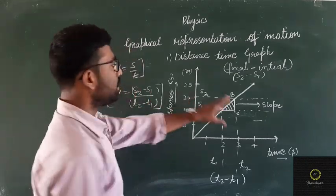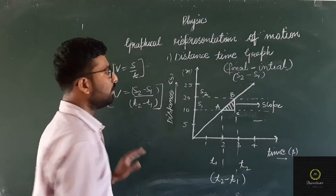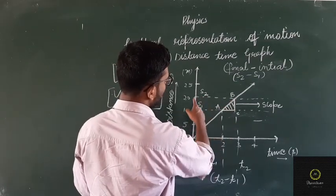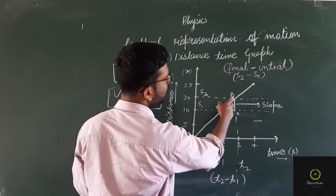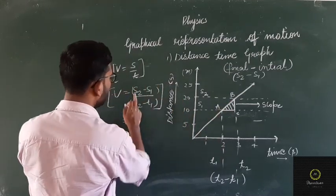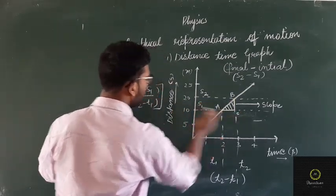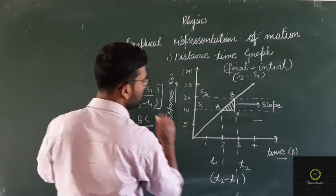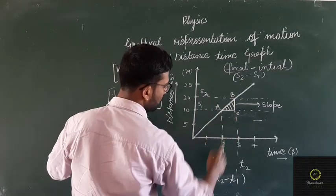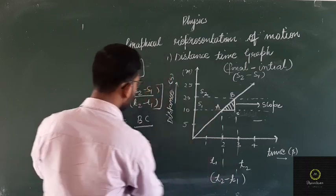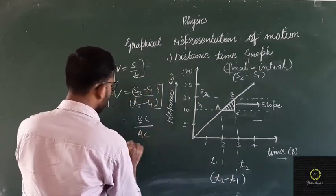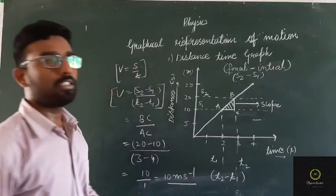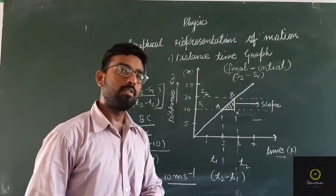S2 minus S1 is the gap — for example 20 minus 10 — that is BC. T2 minus T1 is AC. So the speed in meters per second is BC divided by AC. That is your desired speed.